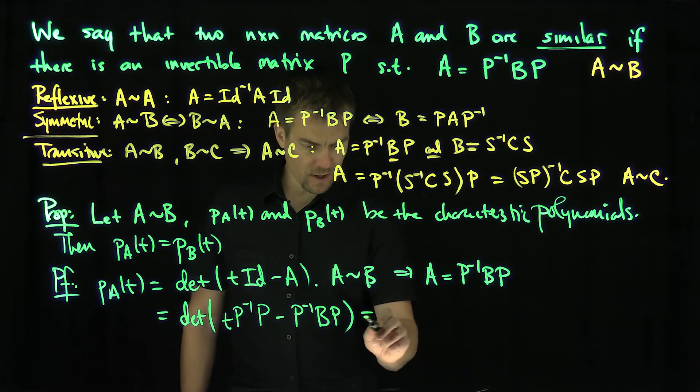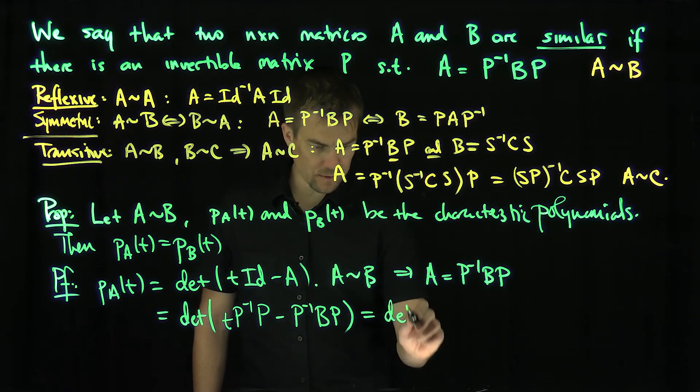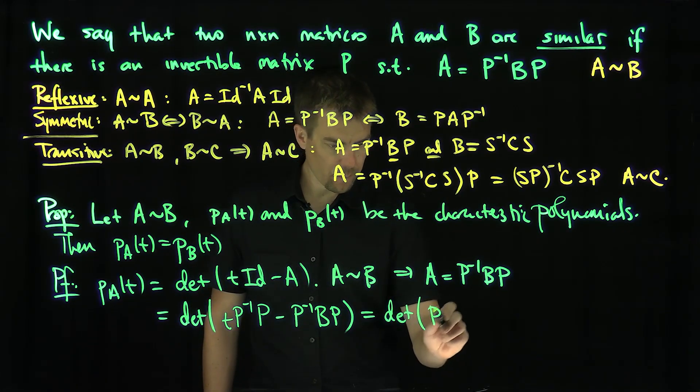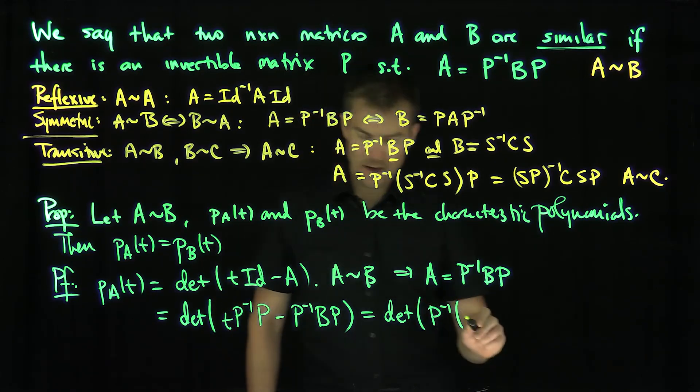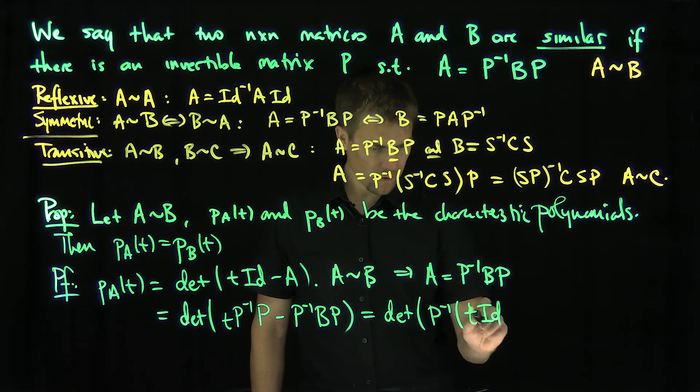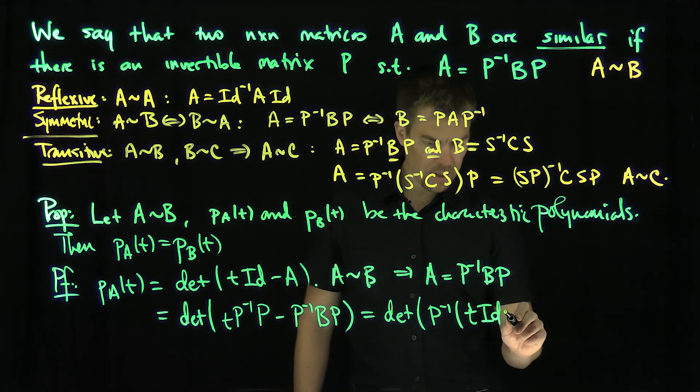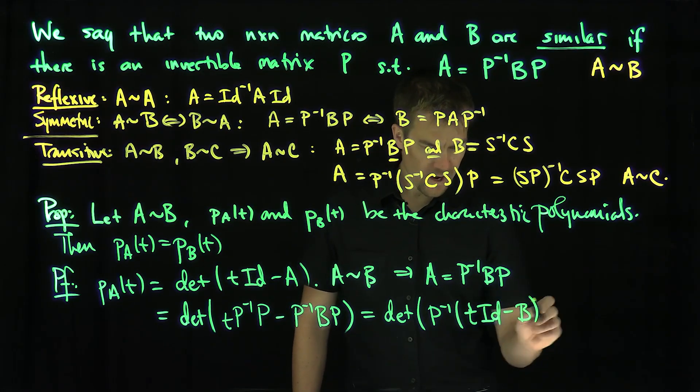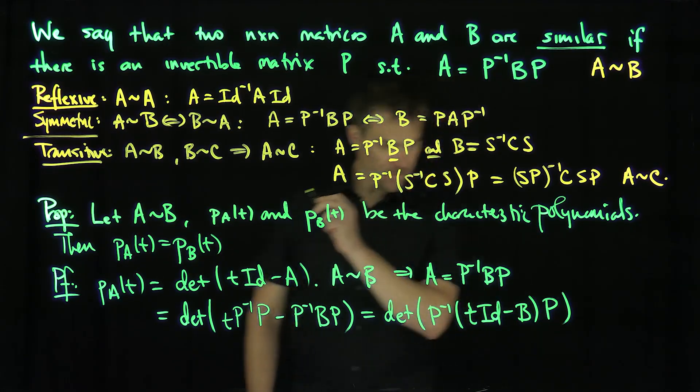And now I can factor this, because everything commutes. This is going to be the determinant of P inverse, and then T identity minus B, and then a P on the other side.